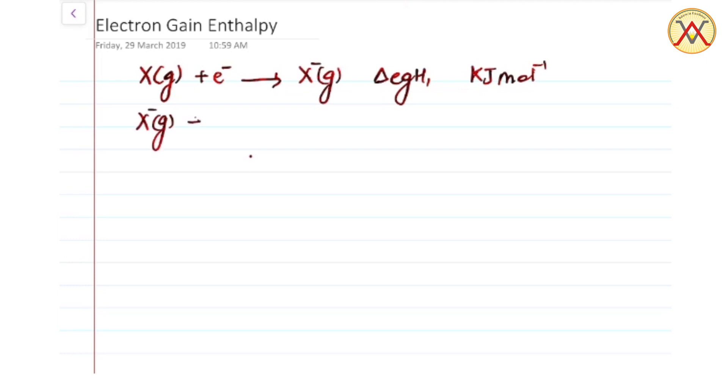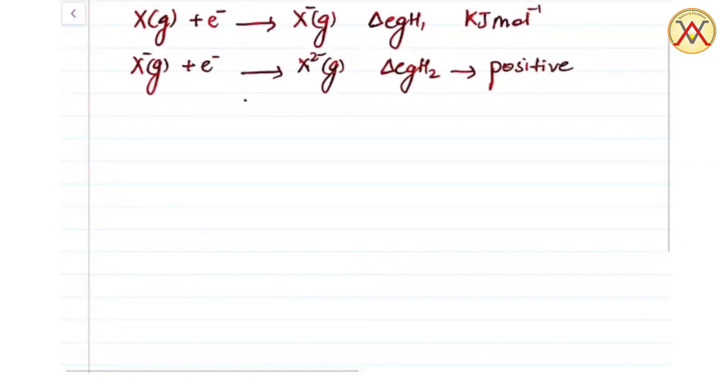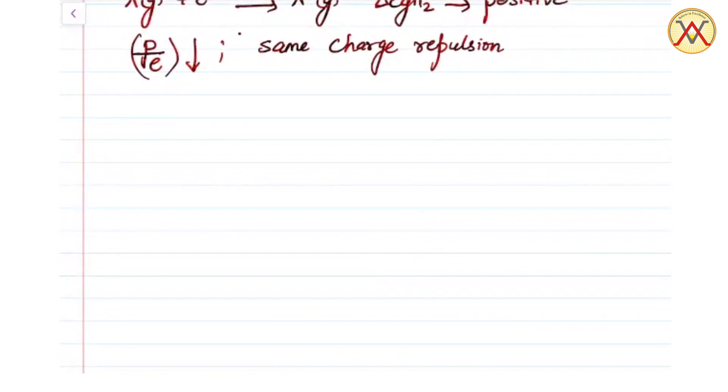Second electron gain enthalpy is always positive, that is, energy is absorbed on adding the second electron. Because the proton to electron ratio decreases and we are adding an electron to an anion, so due to same charge repulsion, energy is absorbed.